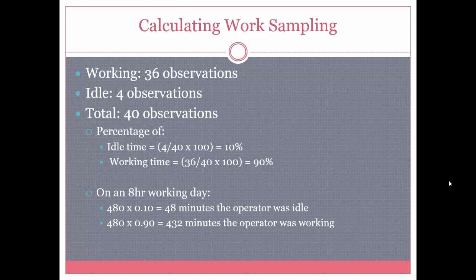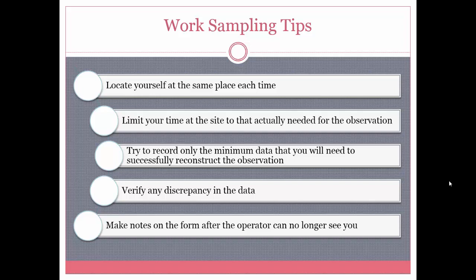A few tips when performing work sampling: locate yourself at the same place each time for more accurate results; limit your time at the site to only what is needed for the observation; record the minimum amount of data necessary; verify any discrepancies with the supervisor in charge of the process; and finally, make notes on the form after the operator can no longer see you, to make sure you don't miss any important observations.